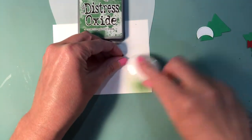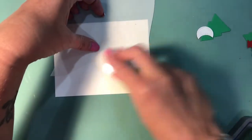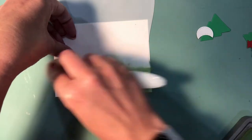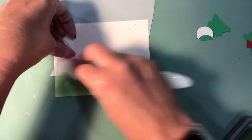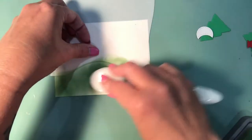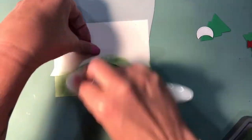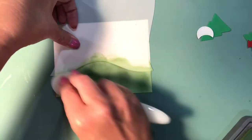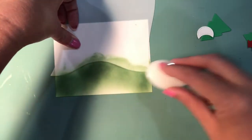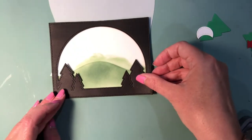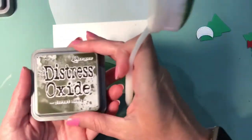This is an MFT hill stencil. I think it's called a hillside stencil. I'll try to remember to link it below in the more information section. I believe it's still available and we're using two colors of distress oxide to create this hill. What we're using now is Rustic Wilderness and then I'm going to come back in with a little bit of Forest Moss to add some depth and dimension to this part of the scene.